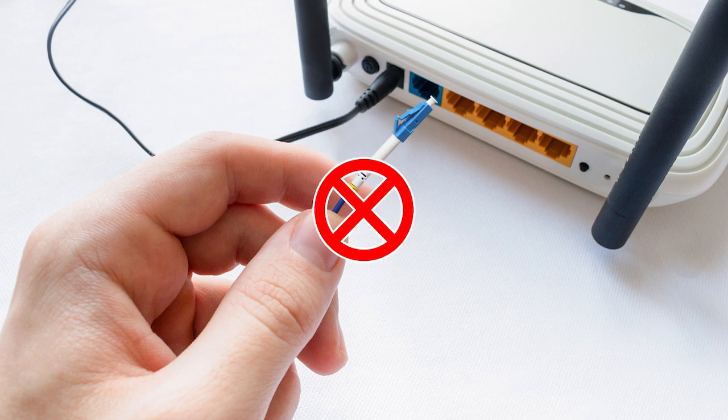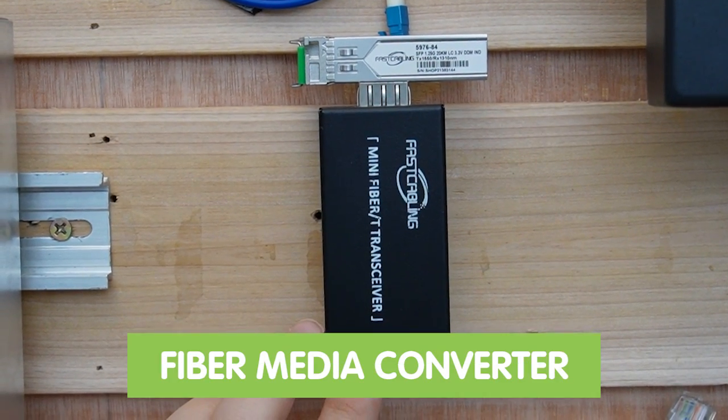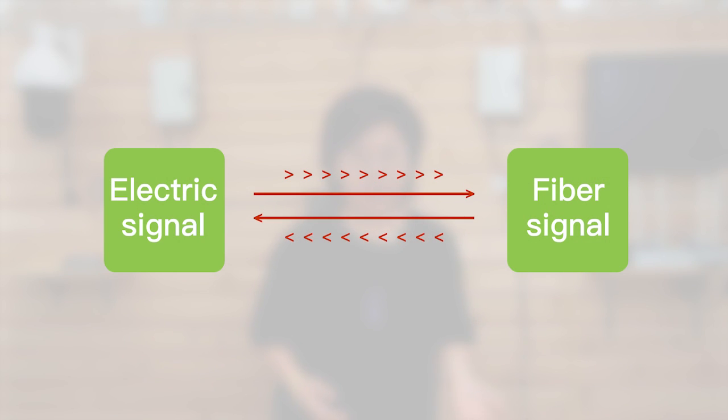And since we cannot plug in the fiber optic cable directly to our router, that's why we need the media converter over here. The media converter can convert the electrical signal into fiber optical signal.